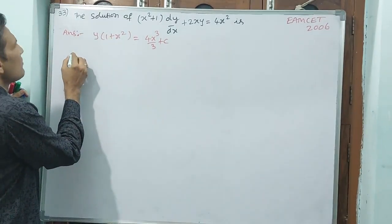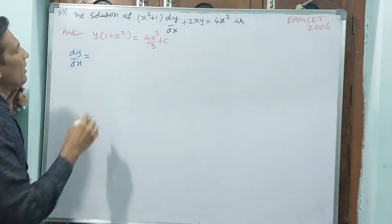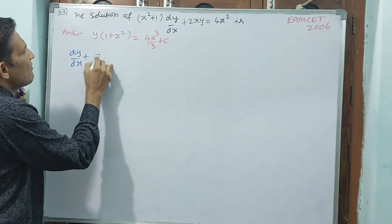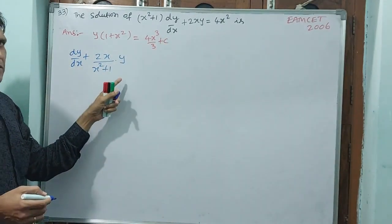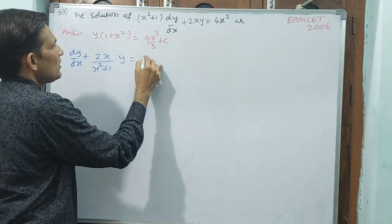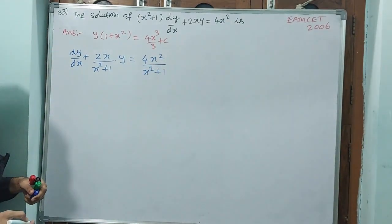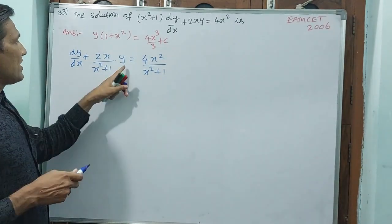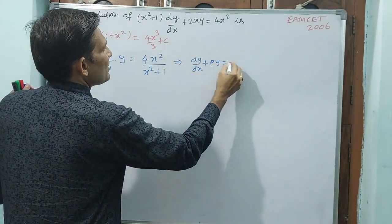What I want to do: divide by x squared plus 1. So dy by dx equals — dividing both sides by x squared plus 1 — giving us the term 2x by x squared plus 1 into y, and 4x squared by x squared plus 1 on the right side. Both sides we are dividing.